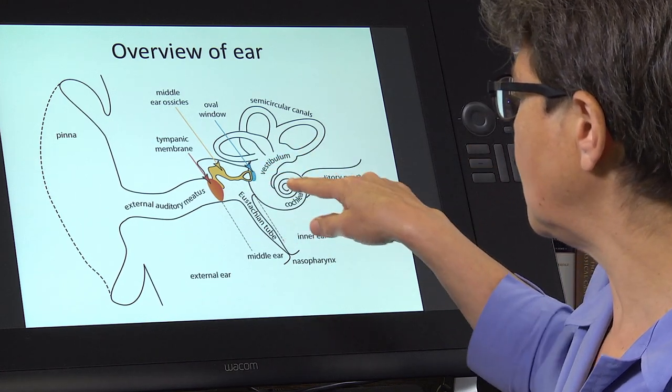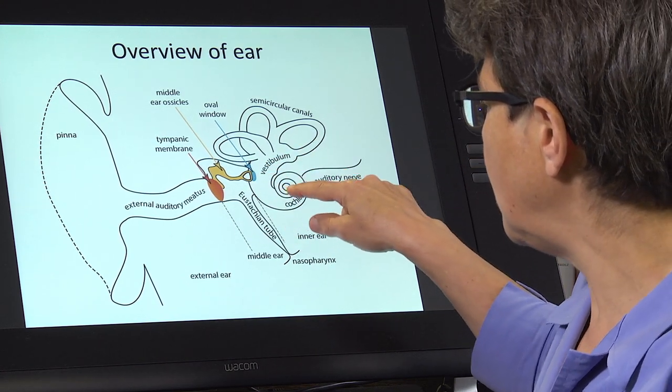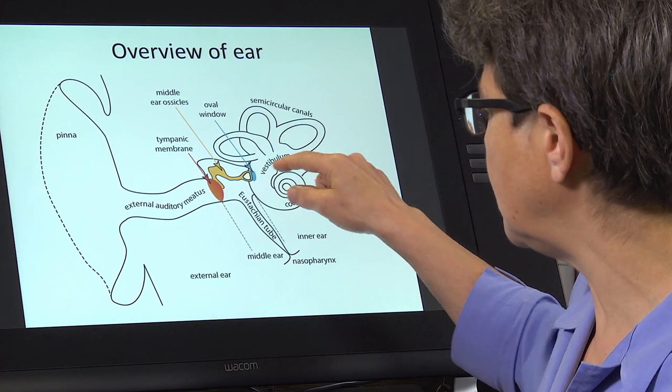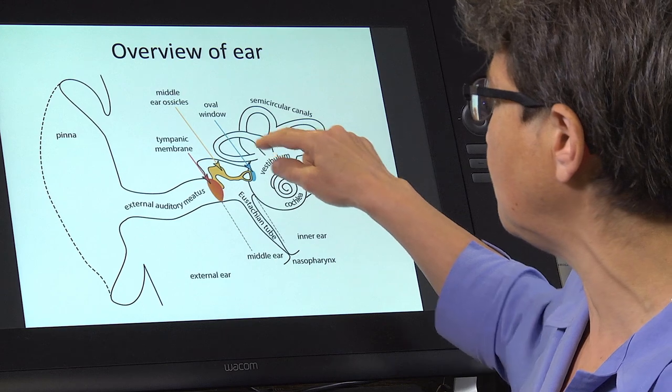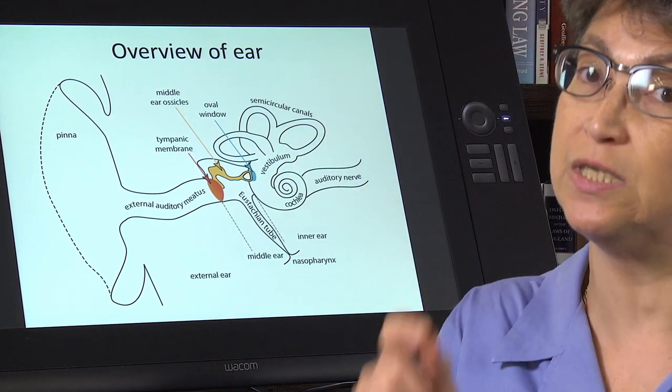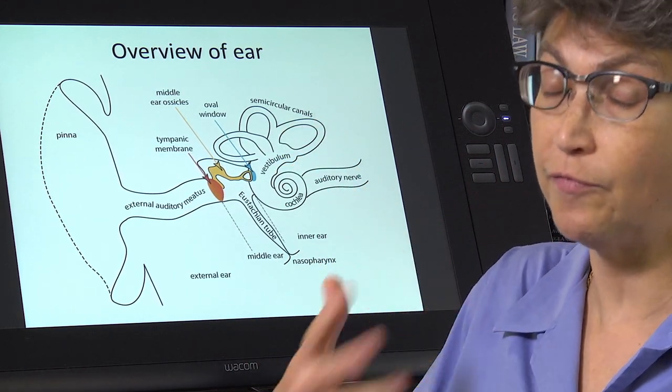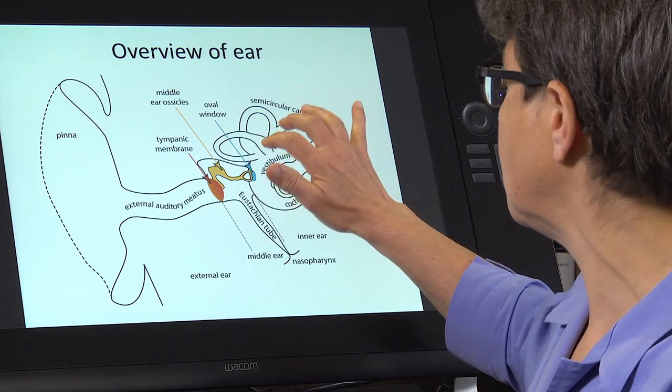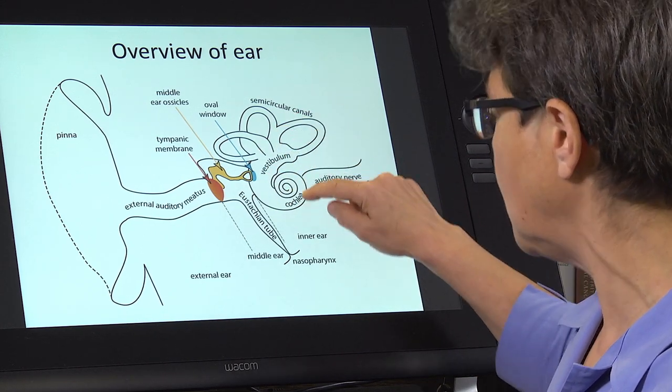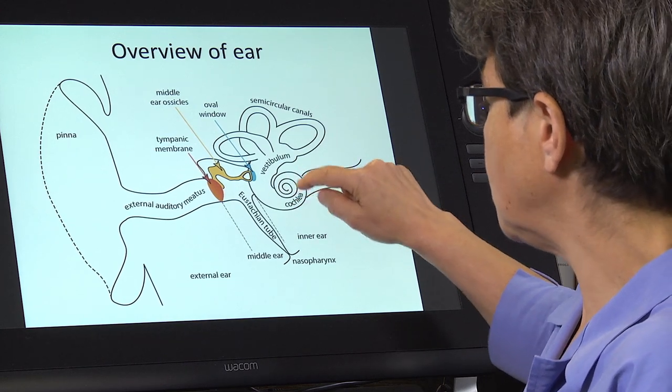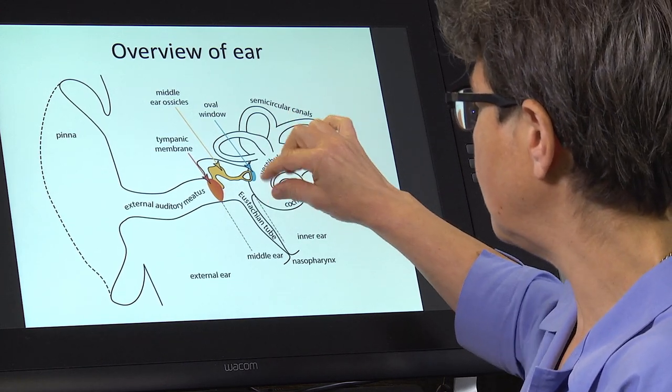The cochlea is sitting right here. It's in the inner ear. The cochlea shares the inner ear with the vestibulum, which is the sensory part of the vestibular apparatus, of the vestibular system. This is a sensory organ for the vestibular system. This is a sensory organ for the auditory system. They share the inner ear.